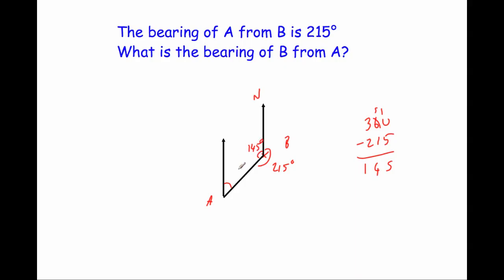These two angles are co-interior angles, so they add up to 180 degrees. If this angle is 145, the other one is 35, because 145 plus 35 equals 180. Be careful — this angle is less than 100, so when writing it as a bearing, the answer is 035 degrees.